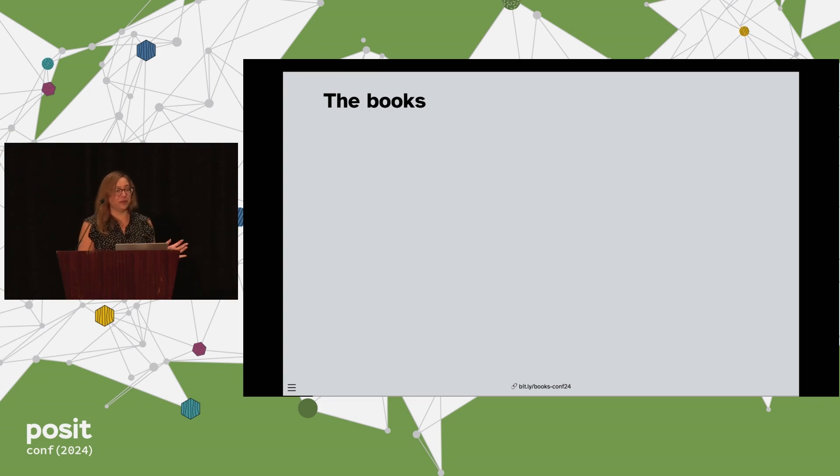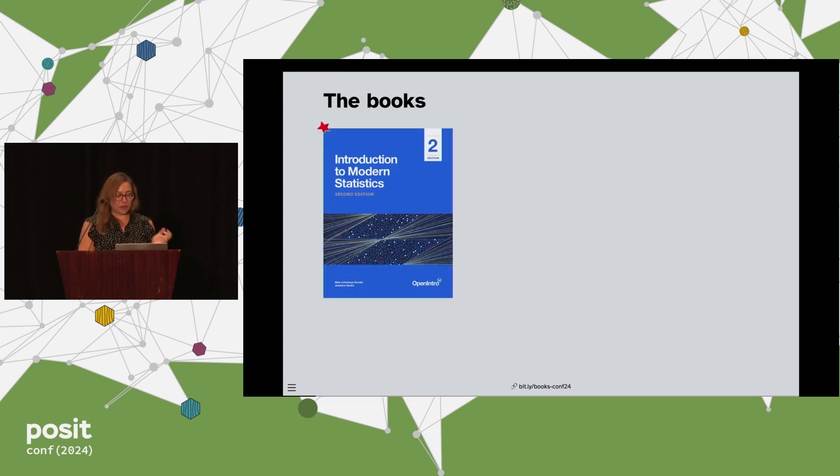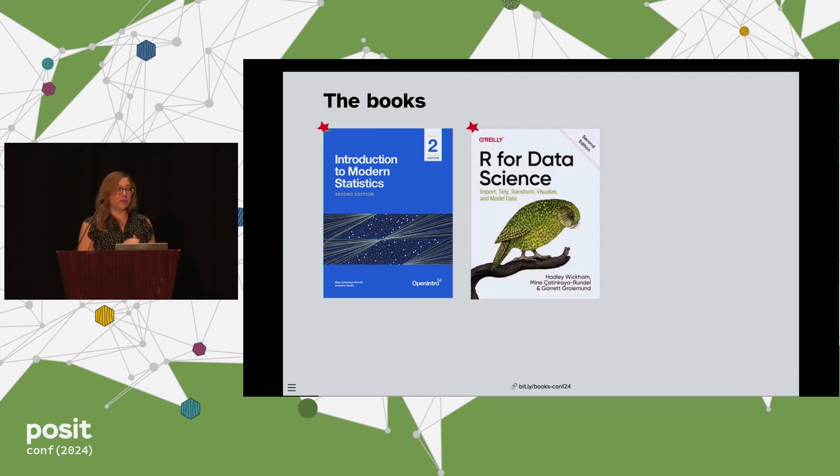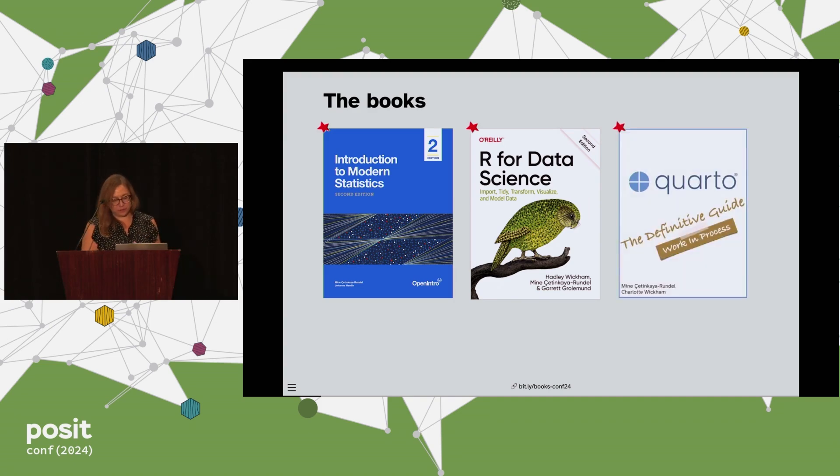I'm going to talk about three books that I've worked on over the last year. The first one is Introduction to Modern Statistics. This is an open source introductory statistics book. The characteristic of this book related to this talk is that it uses code, but it doesn't teach or show code. Figures and tables are made with code in a Quarto document, but the purpose of this textbook is not to teach code. The second one might be one that many of you are familiar with, R for Data Science, that I've had the pleasure of joining the team to write the book in its second edition. And as you probably all know, it does teach code. The last one is a work in progress and it's a little meta. It's a book about Quarto written in Quarto.